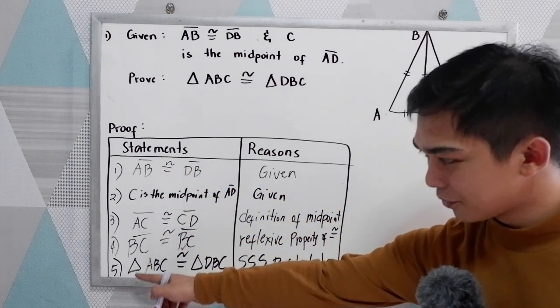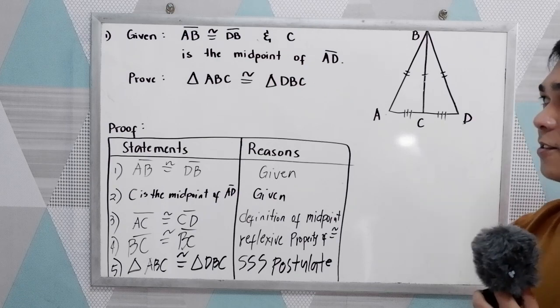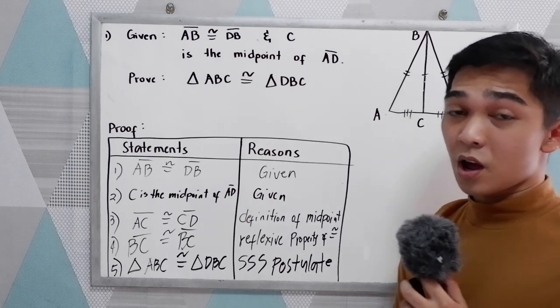So you can see an example of two-column proof. We have five statements and five reasons. Let's proceed to our second example.